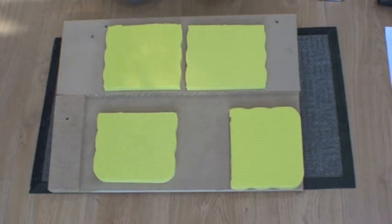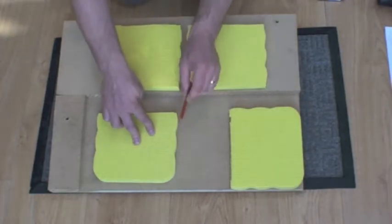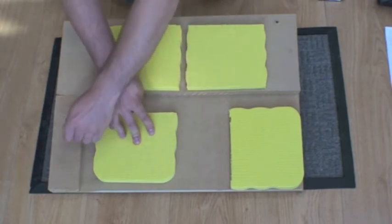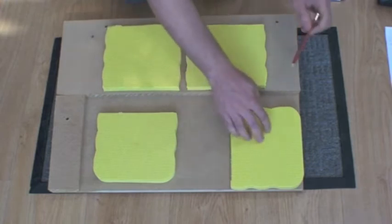Once you're happy with the placement of the pads, just take a pencil and just draw around the edges of them, so that when we come back to gluing them in a minute, we know where the glue needs to go.